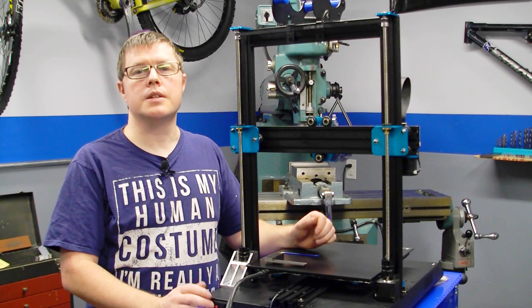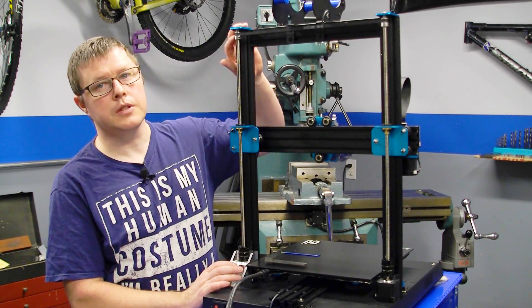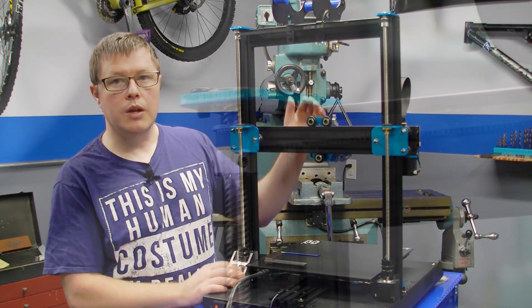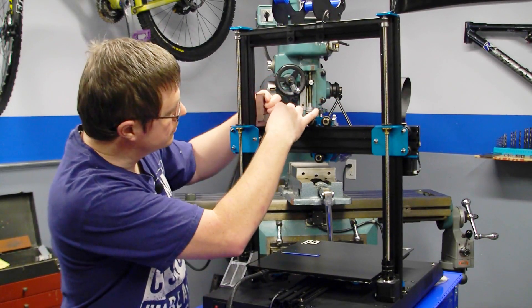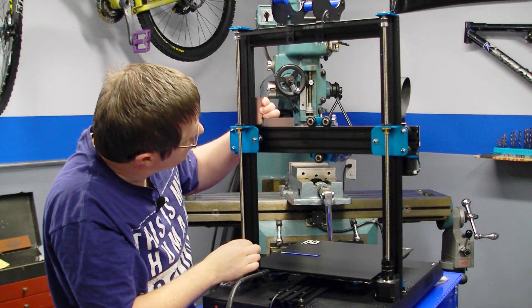The final step is to square the gantry. Ensure that everything is tight except for the two grub screws on the belt pulley. This will ensure that this side of the gantry can move independently from the other side when you move the lead screw. Using the square in this corner, turn the lead screw to move this side of the gantry up or down until you have achieved squareness.